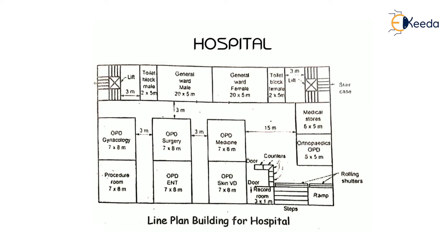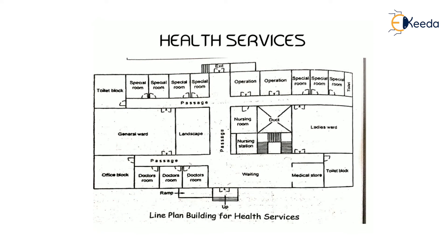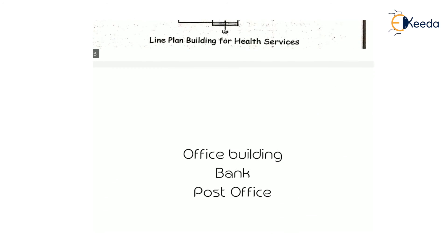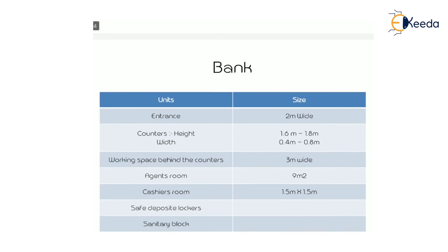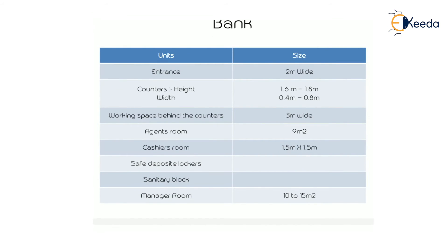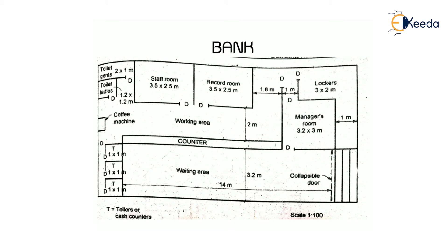This is a simple line plan of a hospital where the general ward, OPD for surgery, skin department, and other units are included. This is the primary health center line plan, which also includes an operation theater, special rooms, wards, doctor rooms, and office block — all units arranged accordingly. The next building type is the office building, which includes bank and post office, with specific units and required sizes for each.